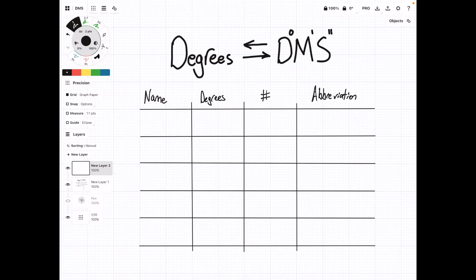In this video, we're going to talk about converting from degrees to degrees, minutes, and seconds, and vice versa. I have a table here that's going to show us what each unit of measurement represents in terms of degrees.